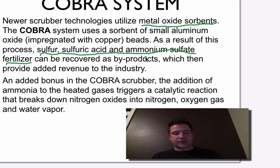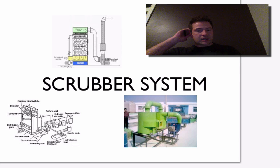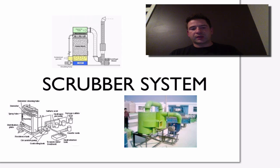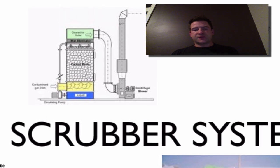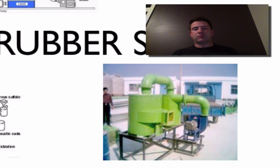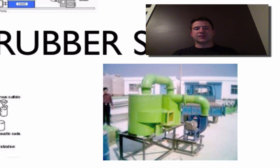Really good system — fantastic technology. Here are a couple pictures of scrubber systems showing other ideas of how a scrubber works. That's scrubbers, guys: the use of sorbents. One example was the COBRA system. Hopefully you've taken notes on this. If you have questions, please bring them to class when we discuss it. Thanks for tuning in, guys. Bye.